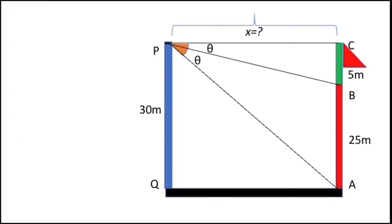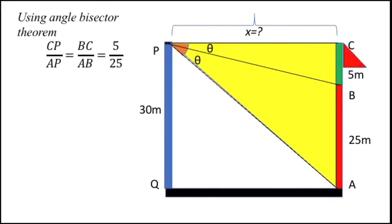To find x, consider triangle PCA. In this triangle, PB is the angle bisector. Using the angle bisector theorem, CP/AP = BC/AB = 5/25 = 1/5. Therefore, if CP = x, then AP = 5x.